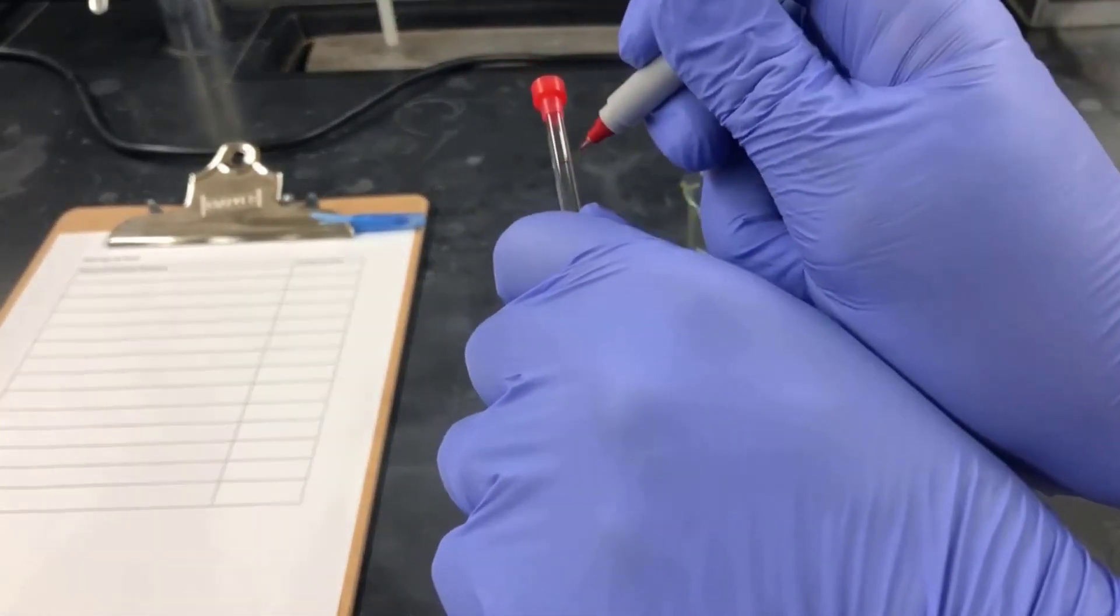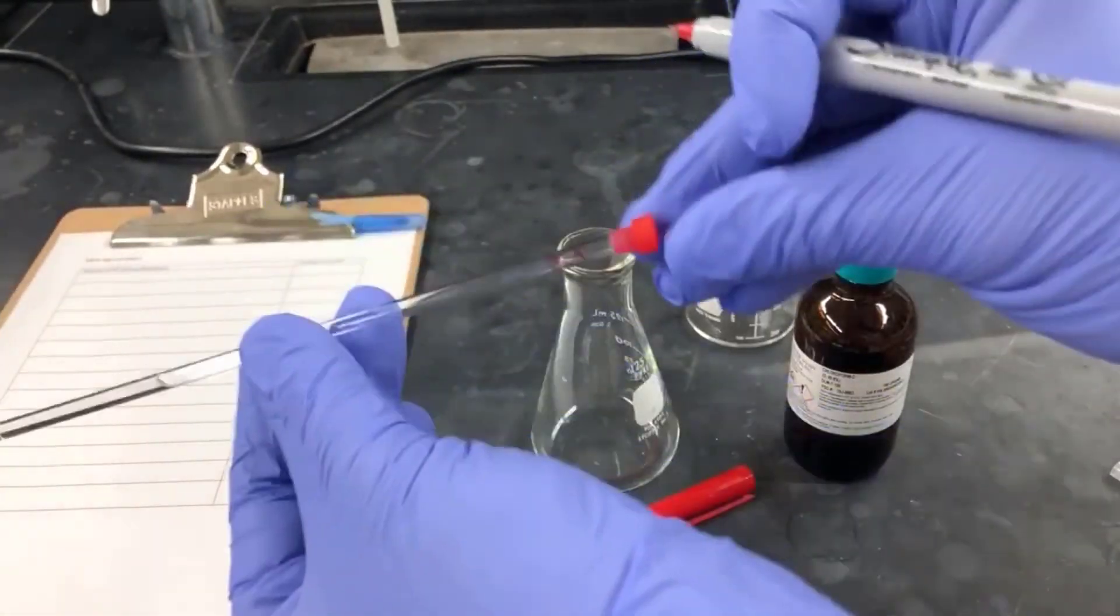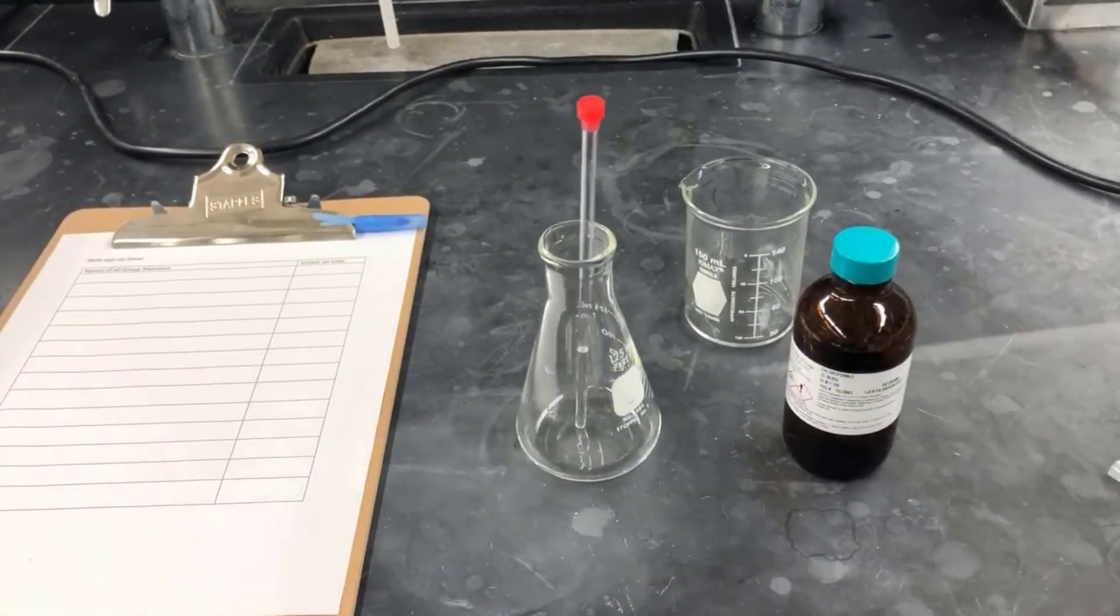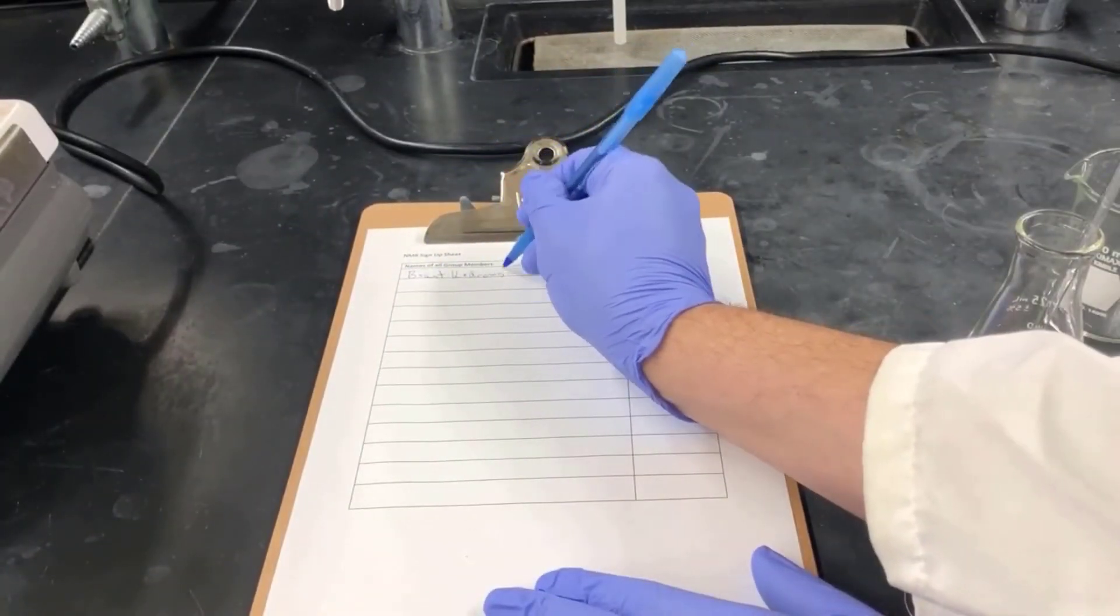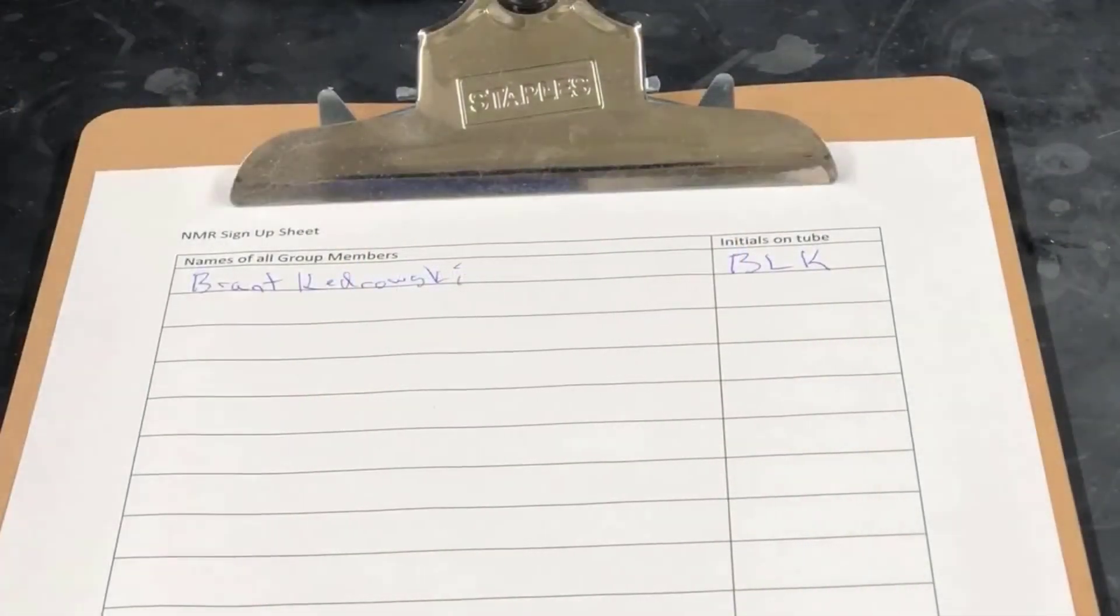Next, write your initials on the top of the tube with a Sharpie marker and put your name and initials on the NMR sign-up sheet that's provided. I'll collect your NMR data and send it to you by email. You'll either be sent a PDF image of your NMR spectrum or the data file itself, which can be opened in the NMR program called TopSpin. Using TopSpin to open and process NMR data will be covered in another video.